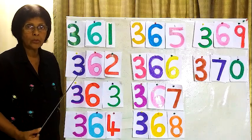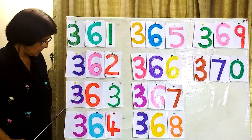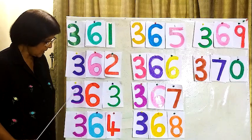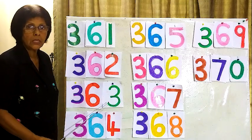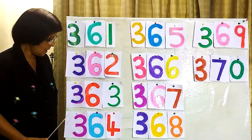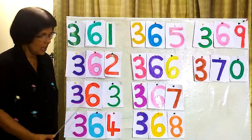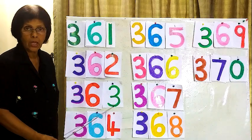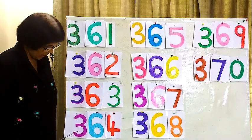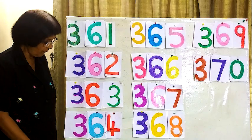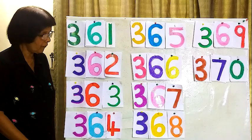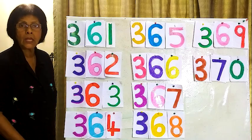Okay? Now we will go to the next number here, this is 363, this is how we are writing 363. Okay? Then the next number here, this is how we are going to write 364, 364.